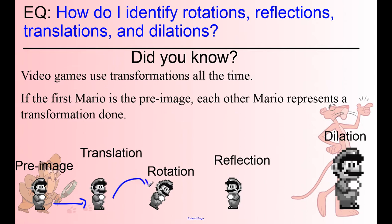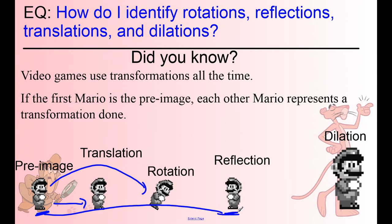A rotation — you can probably guess — the rotation would be this one way over here. It's been rotated, it's been turned. A reflection: if you look at this guy and this guy, they're facing different directions. In the original Mario game, if they wanted Mario to run to the right versus to the left, all they would do is take his little picture — it's called a sprite — and they would literally just flip it.